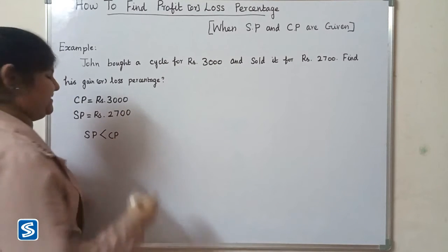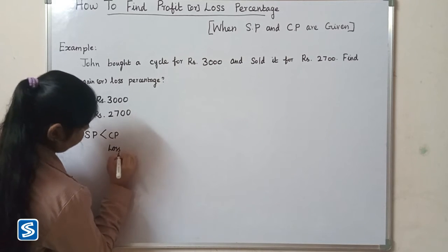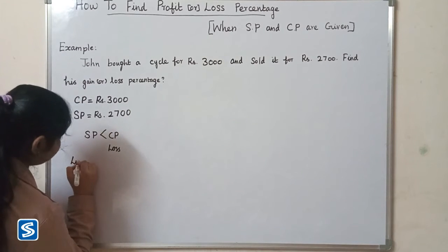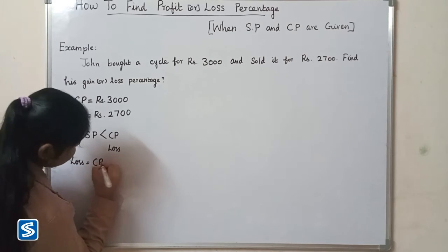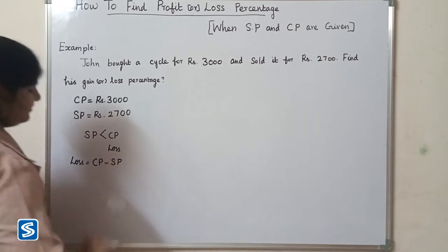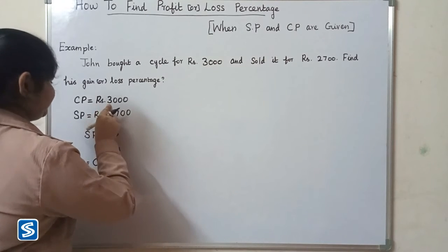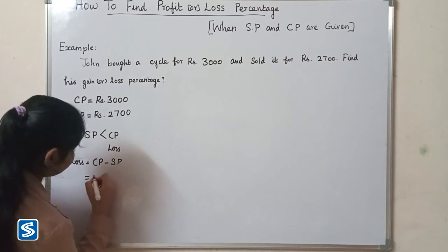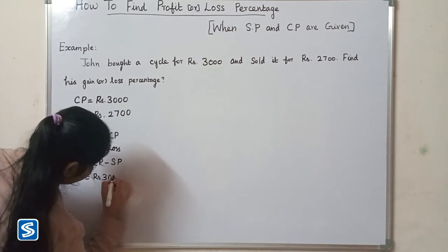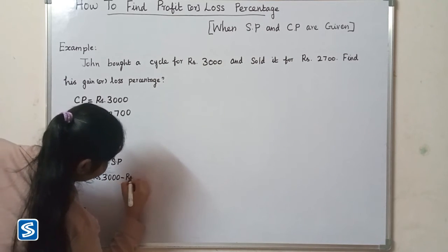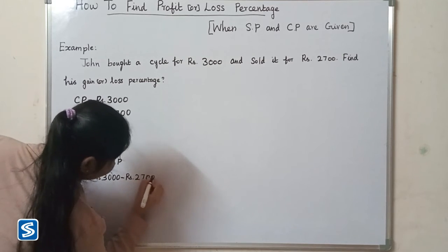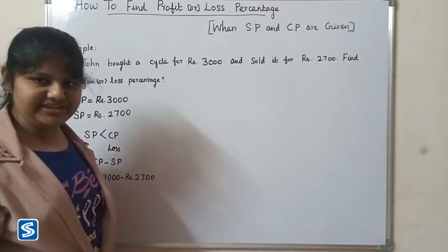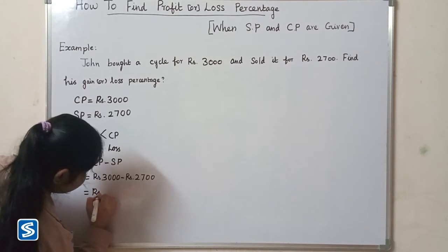So now we have to find the loss. We already know that loss is equal to cost price minus selling price. Here cost price is rupees 3000 and selling price is rupees 2700. So rupees 3000 minus rupees 2700 will be rupees 300.